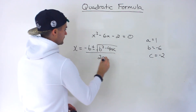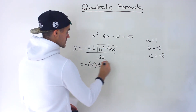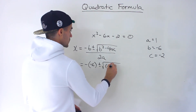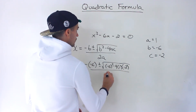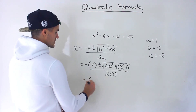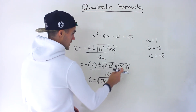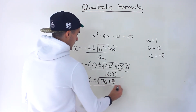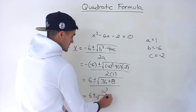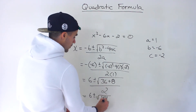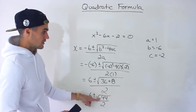Let's use the quadratic formula. The a value is 1, the b value is negative 6, the c value is negative 2. Plugging in: x equals negative of negative 6 (in brackets) plus or minus the square root of negative 6 squared minus 4 times 1 times negative 2, all over 2 times 1. That gives positive 6 plus or minus the square root of 36 plus 8, all over 2.